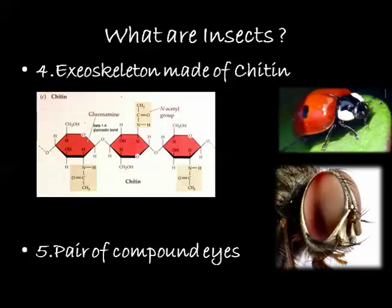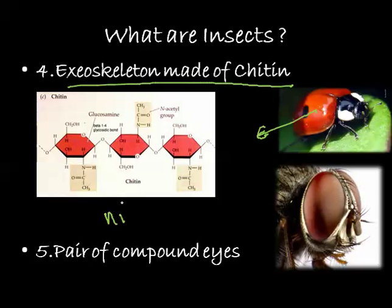The next characteristic is that the exoskeleton is made of chitin. This is a hard structure which protects the insects from the external environment. It is made up of nitrogenous polysaccharides.